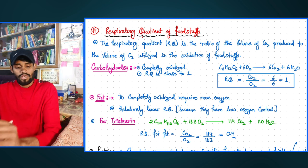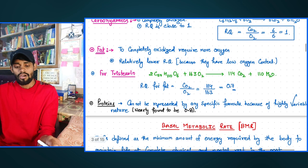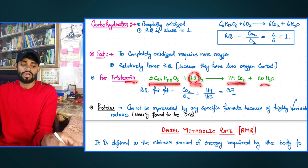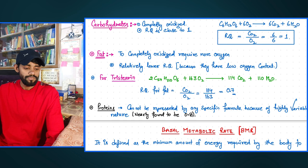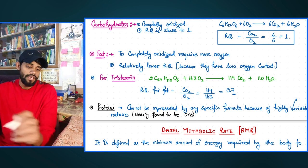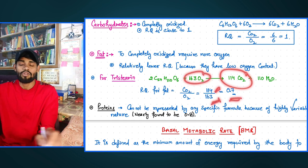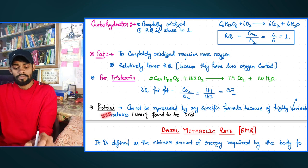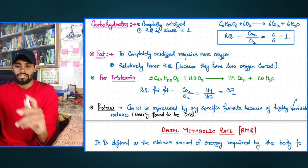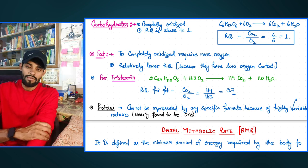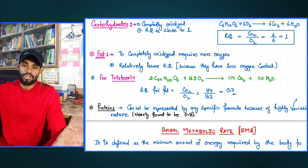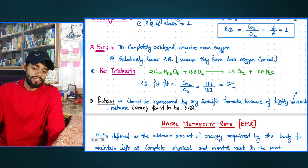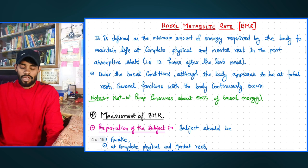For fat, take tristearin as an example. Its oxidation requires 163 molecules of oxygen, producing 114 CO₂ and 110 H₂O. So its RQ = 114/163, which is less than 1, meaning fat is not completely oxidized. Similarly for protein, it cannot be represented by a specific formula because protein nature is highly variable — it also has an RQ less than 1, and leaves by-products during oxidation.